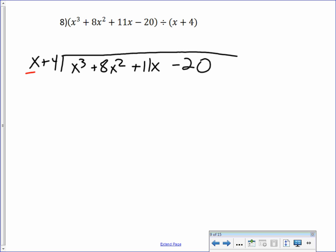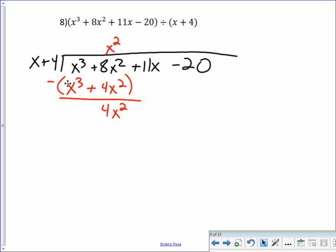So, how do I turn x into x cubed? Well, I'm going to multiply it by x squared. So I multiply what's up top by what's out front. And that will give me x cubed plus 4x squared. And I subtract those. And when I, now we subtract. And so this is 8x squared minus 4x squared will give me 4x squared. And I bring down the 11x.